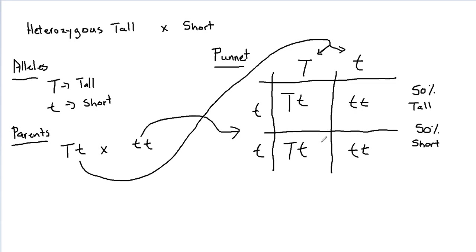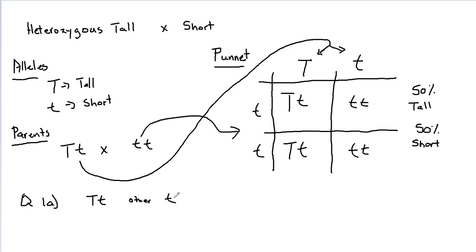Now, that's what we've done by doing alleles, parents, and Punnett square. Let's remind ourselves what the question is. A pea plant that is tall is crossed with a pea plant that is short, which is the recessive trait. Tall is dominant to short, and the tall pea plant is heterozygous. We want to indicate all the possible genotypes for the parents — that's question 1a. It's indicated: one parent is heterozygous and the other is short, so it can only be Tt × tt. That answers question 1a.